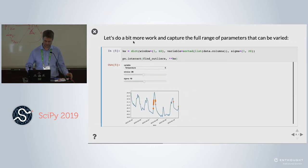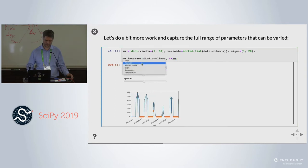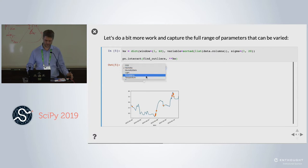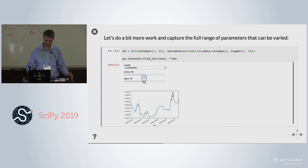So let's do a little bit more work. Let's say that the window should be a positive number, one or greater. The variable should be any of the columns in the data frame. The sigma should have some reasonable value. Now you can choose any of the different variables, drag the sliders, and there are no inappropriate values anymore.